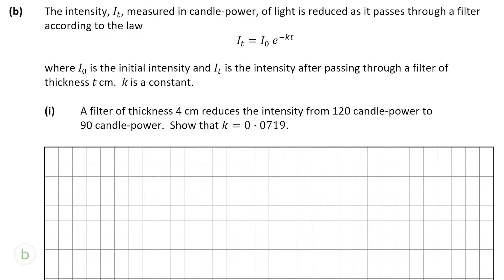Now we're moving on to part B, which is the logarithm part of the question. Part B tells us that the intensity i_t, measured in candle power of light, is reduced as it passes through a filter according to the law i_t equals i_0 times e to the power of minus kt, where i_0 is the initial intensity and i_t is the intensity after passing through a filter of thickness t centimetres. k is a constant, meaning it stays the same every time no matter what.